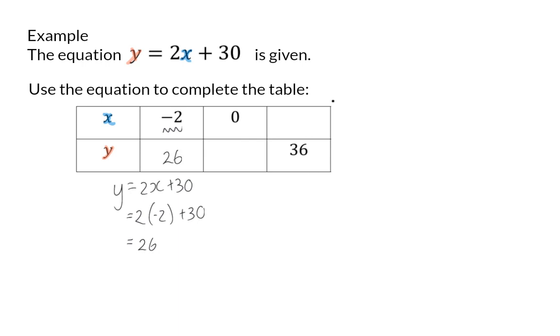The combination of x and y value forms an ordered pair on your system of axes. When the x value is minus 2, the y value will be 26.